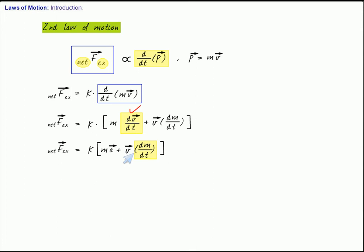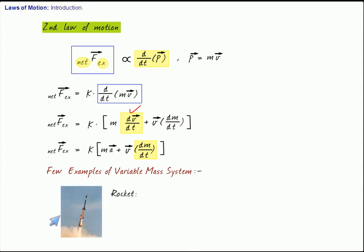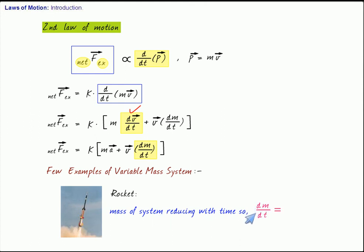Let us take an example of a variable mass system — a rocket. For a rocket, basically what happens is the fuel is burning continuously. As a result, the mass of the system is reducing with time. Therefore, dm/dt is not zero for the case of a rocket, where fuel is burning continuously and mass is reducing with time.